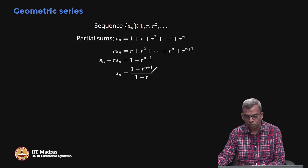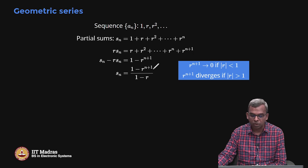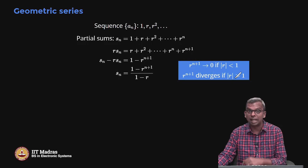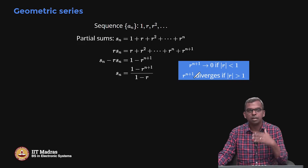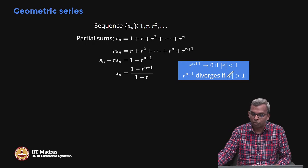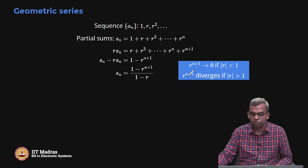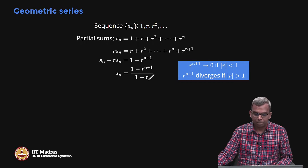Now limits are easy to obtain. What happens to r^(n+1)? If the absolute value of r is less than 1, r^(n+1) tends to 0 — that is a nice thing. However, if |r| > 1, r^(n+1) diverges — either to infinity or with no limit. If r = 2, for instance, you get 2^(n+1) going off to infinity. If r = −2, you get an alternating thing that does not converge at all.